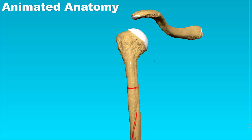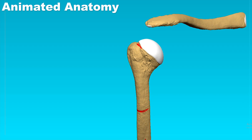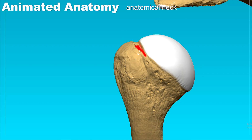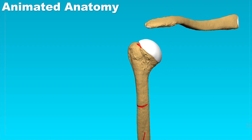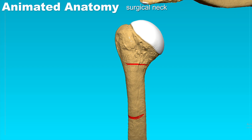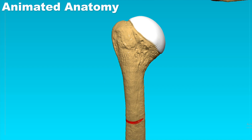Just a little bit further up you will see this constriction here — that constriction is called the anatomical neck. The humerus also has the surgical neck. The surgical neck is basically where most of the fractures happen, which is why it's called the surgical neck.